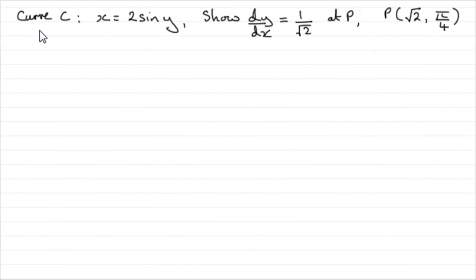Now for this part of the question, we're given that curve C is such that x equals 2 sine y, and we've got to show that dy by dx is equal to 1 over root 2 at the point P, where P has coordinates root 2, pi upon 4.